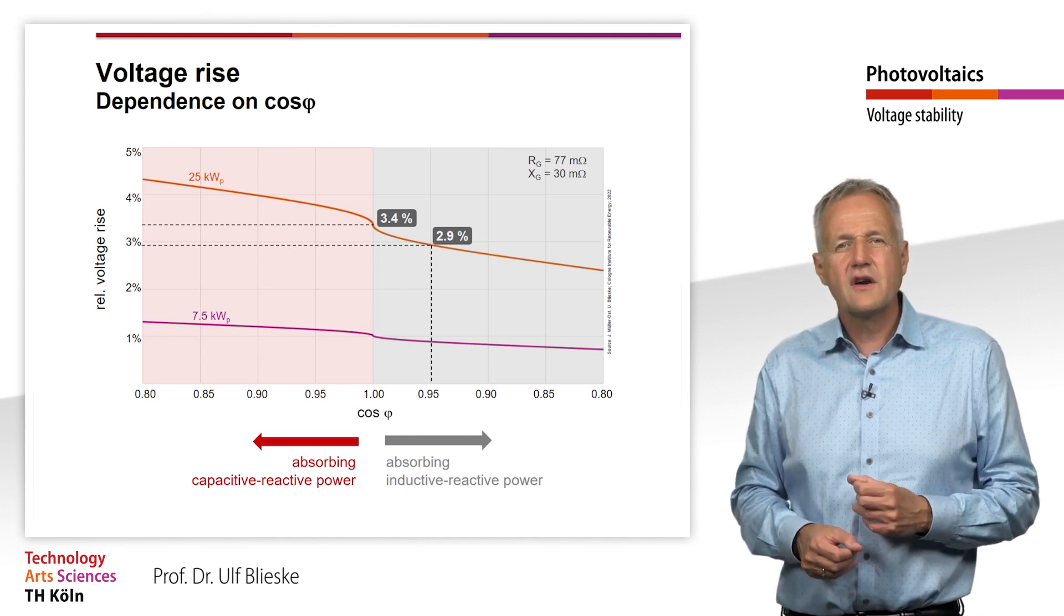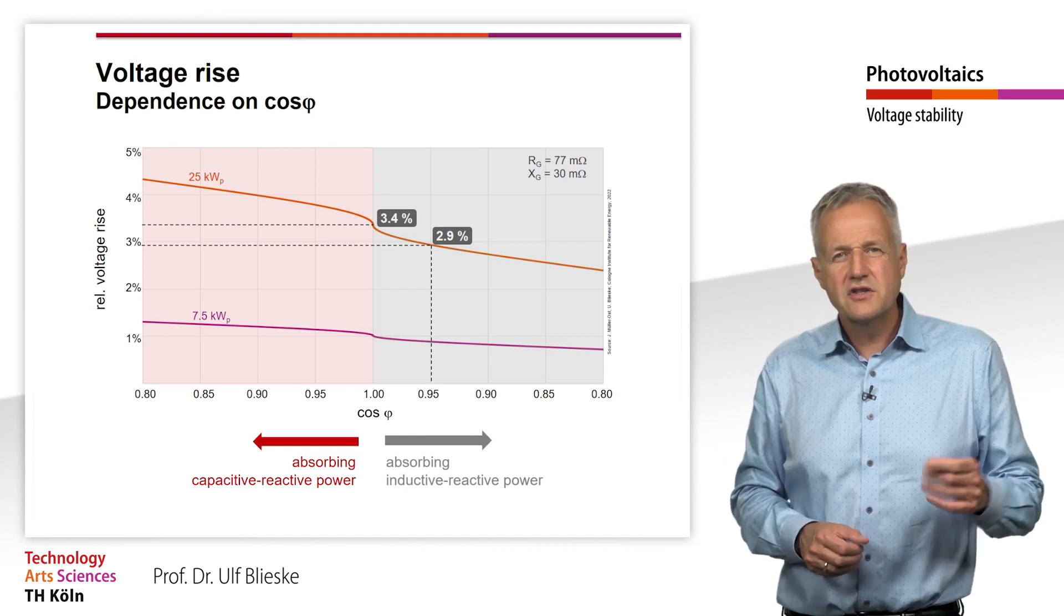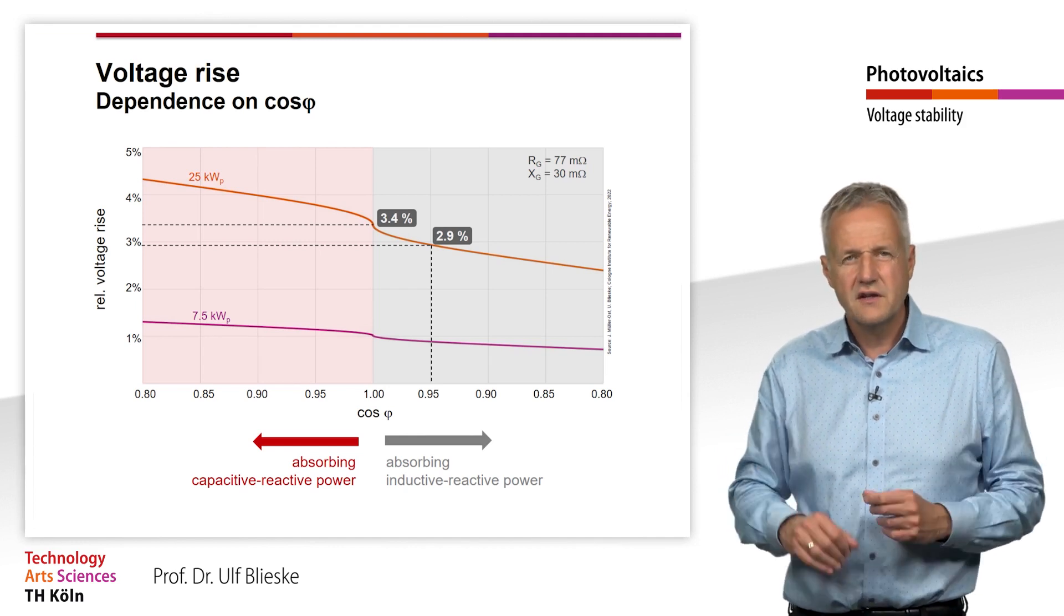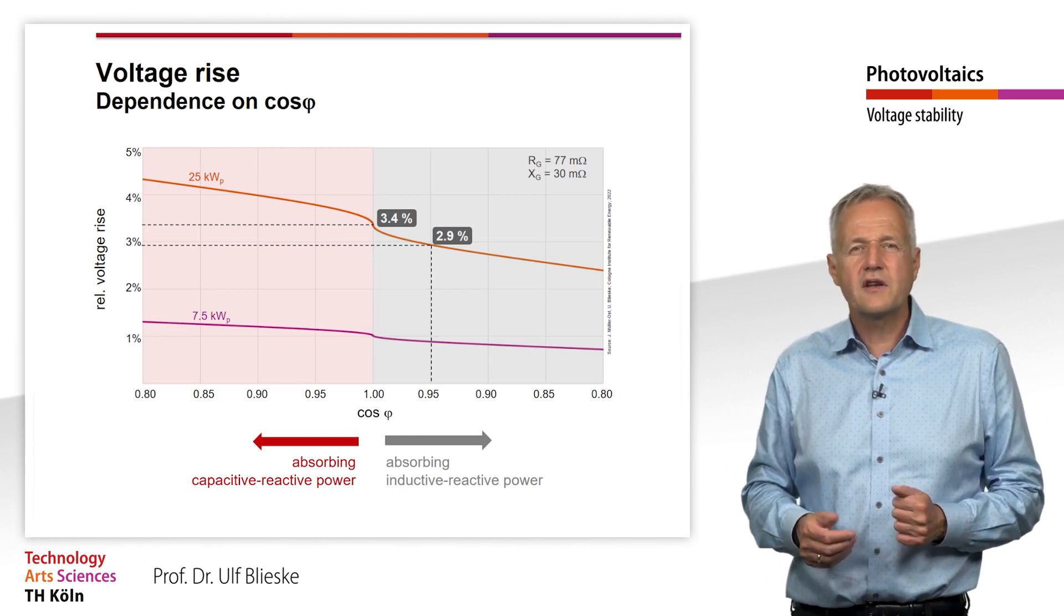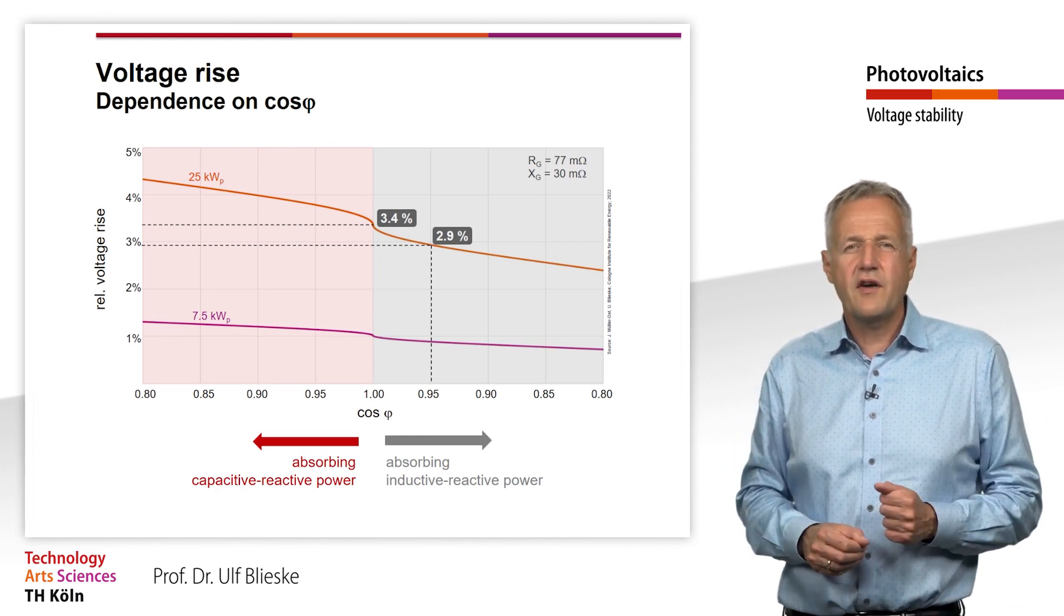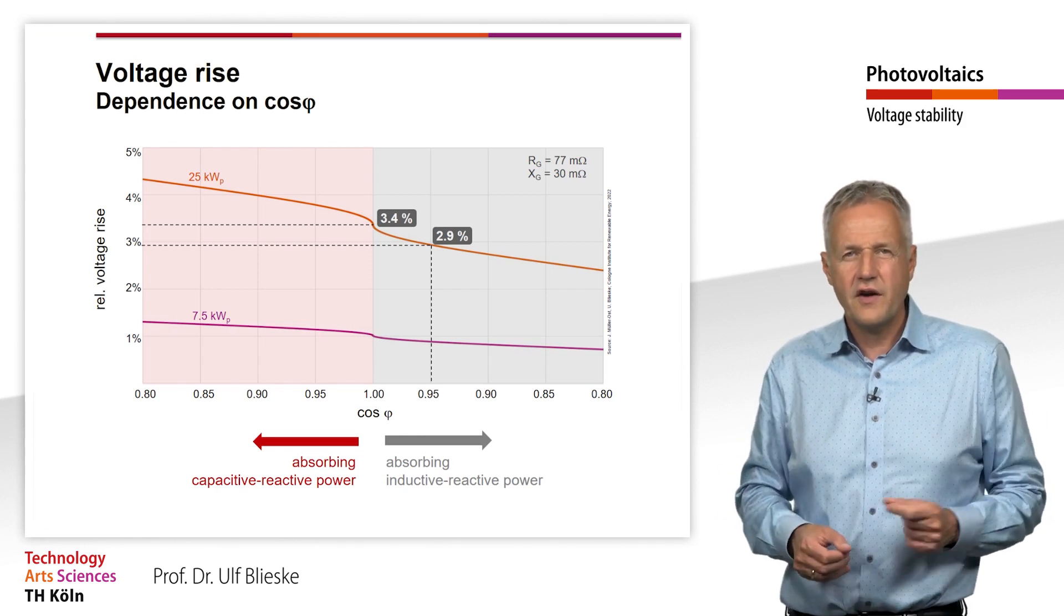The calculation of the diagram was based on an R/X ratio typical for a low voltage grid in Germany. The upper line results from a somewhat larger plant with 25 kW peak, the lower line for a smaller plant with 7.5 kW peak.